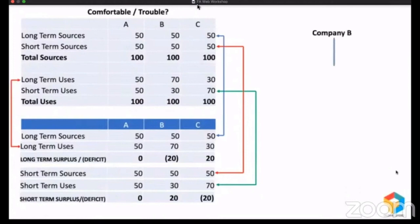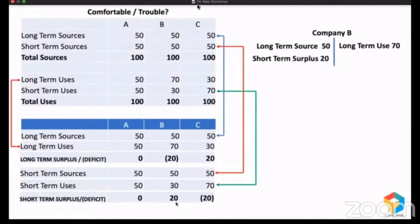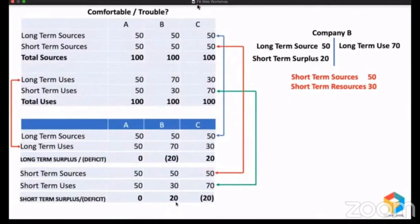Pay attention here. Company B raised a long-term source of 50 but created a long-term use of 70. How is that possible? With 50, you cannot create 70. So from where did they get the remaining 20? Obviously, they got that remaining 20 from their short-term surplus. So this short-term surplus of 20, together with a long-term source of 50, gave them 70 million which they used for a long-term purpose. That's why we say Company B is in trouble. They raised a short-term source of 50 and are supposed to repay 50 million in one year, but they have created only 30 million worth of resources.